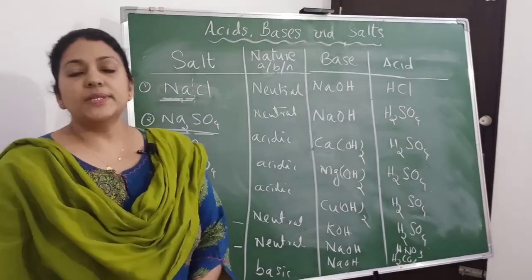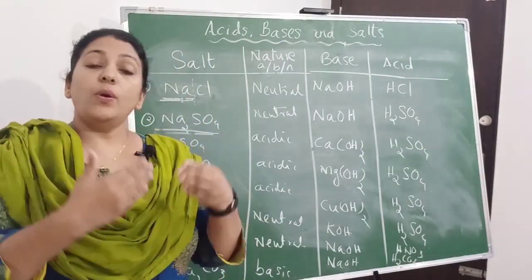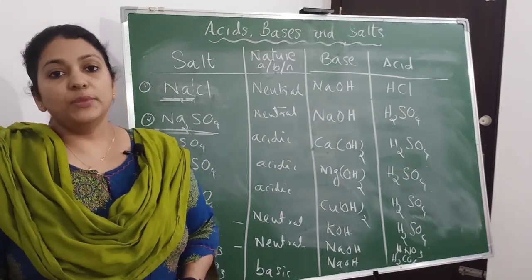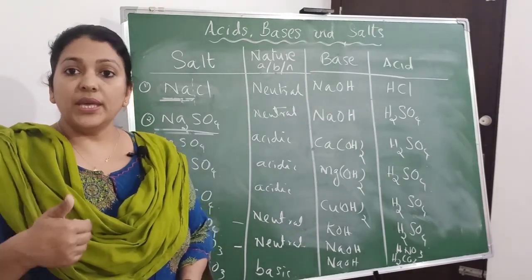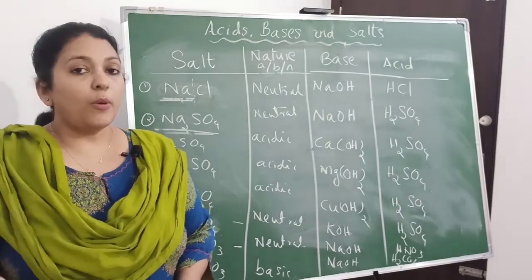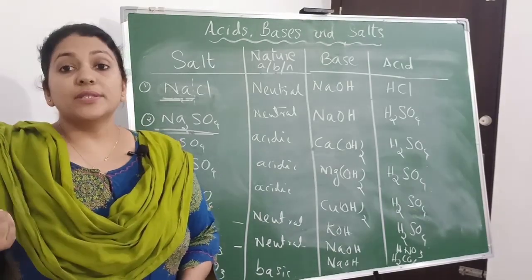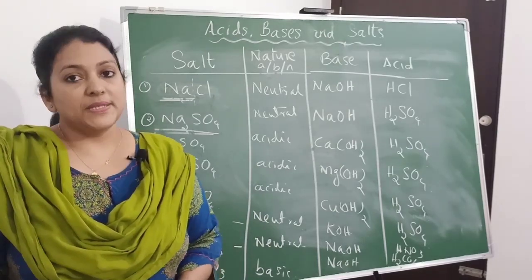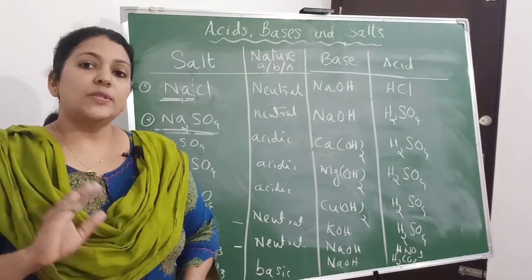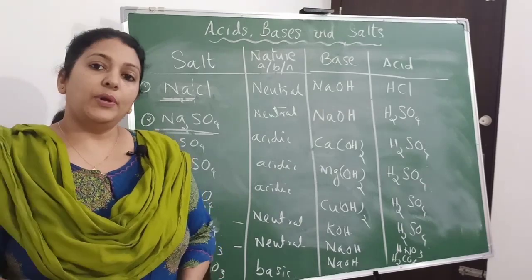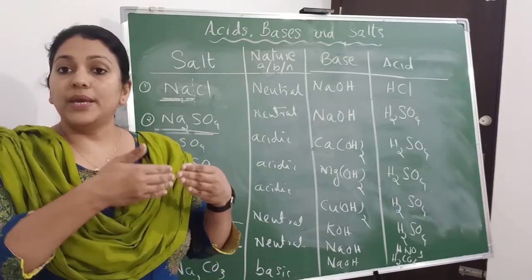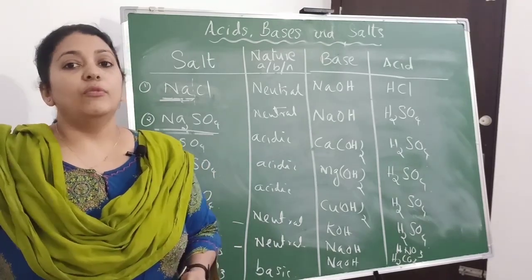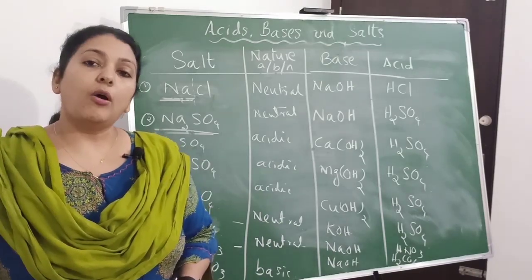From these examples, we can conclude that when a strong acid and a strong base react, a neutral salt is formed. But when a strong acid and a weak base react, the salt formed will be acidic. And when a strong base and a weak acid react, the salt formed will be basic in nature. Remember — all salts are not neutral. Depending upon the nature of the acid and base from which the salt is formed, the nature of the salt may vary to acidic, basic, or neutral.